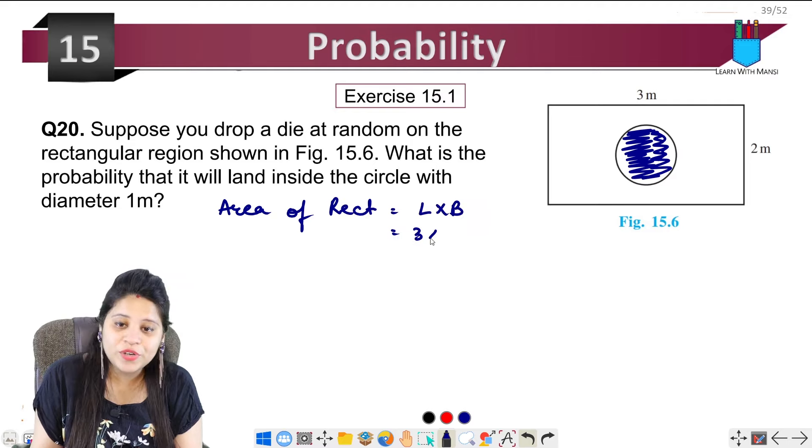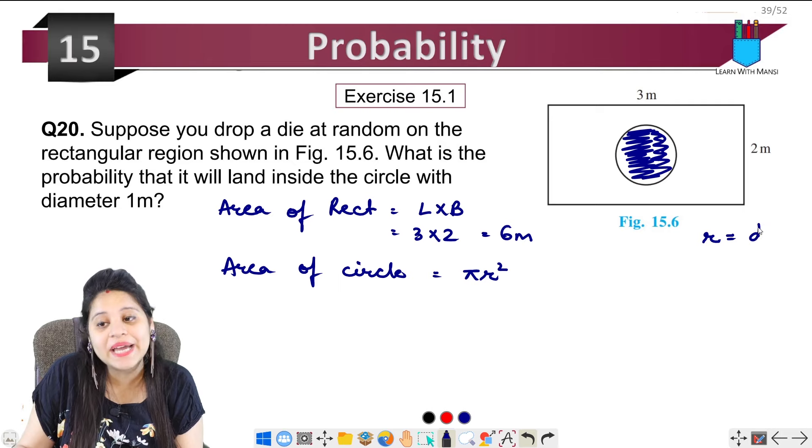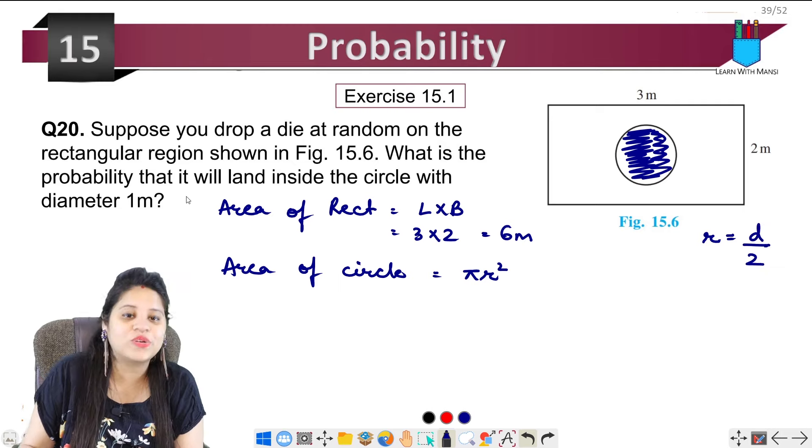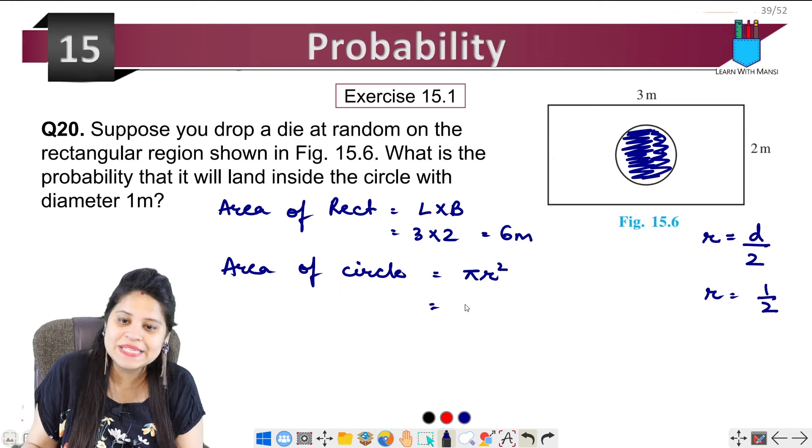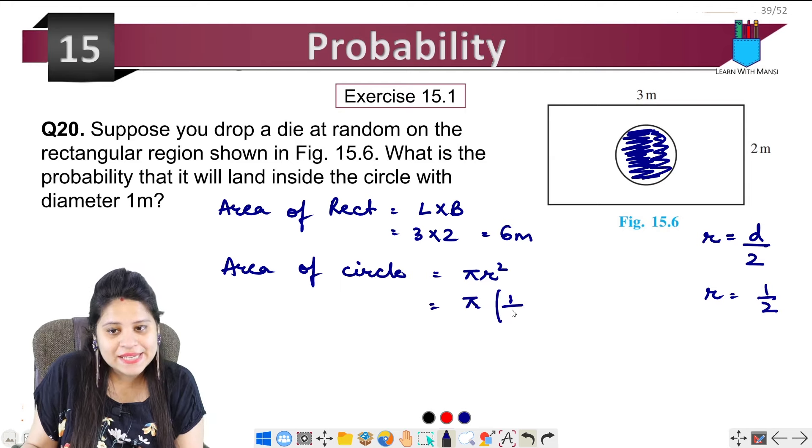Now we'll find the area of circle. The area of circle is pi r squared. We have the diameter as 1 meter, so radius is 1 upon 2. So pi r squared is pi into (1/2)², which equals pi upon 4.